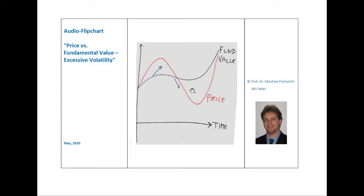For instance, after the dot-com bubble had built up, many retail investors bought high-tech stocks in late 1999 at extremely high prices. Also, after the burst of the real estate bubble in 2008, many retail investors lost their nerves and sold their stocks at relatively low prices. This is interesting because it is a strategy that none of us would apply when buying clothes — you try to buy them during the sales period when they are cheap. With stocks, however, many retail investors do exactly the opposite: they buy at high prices and sell at low prices.